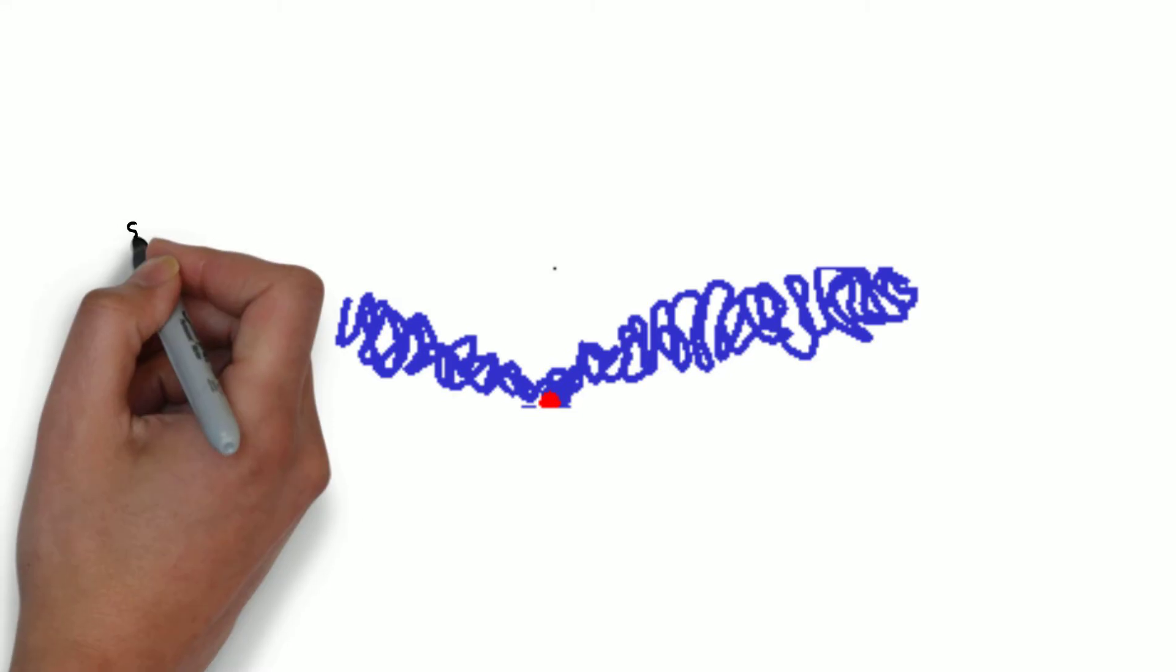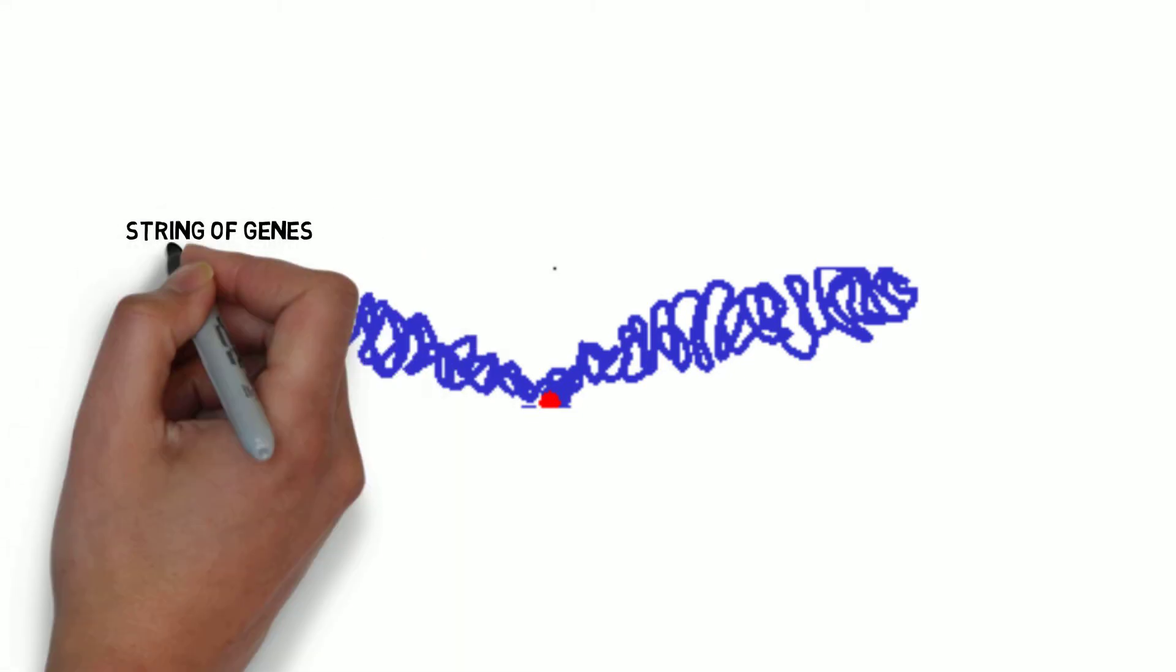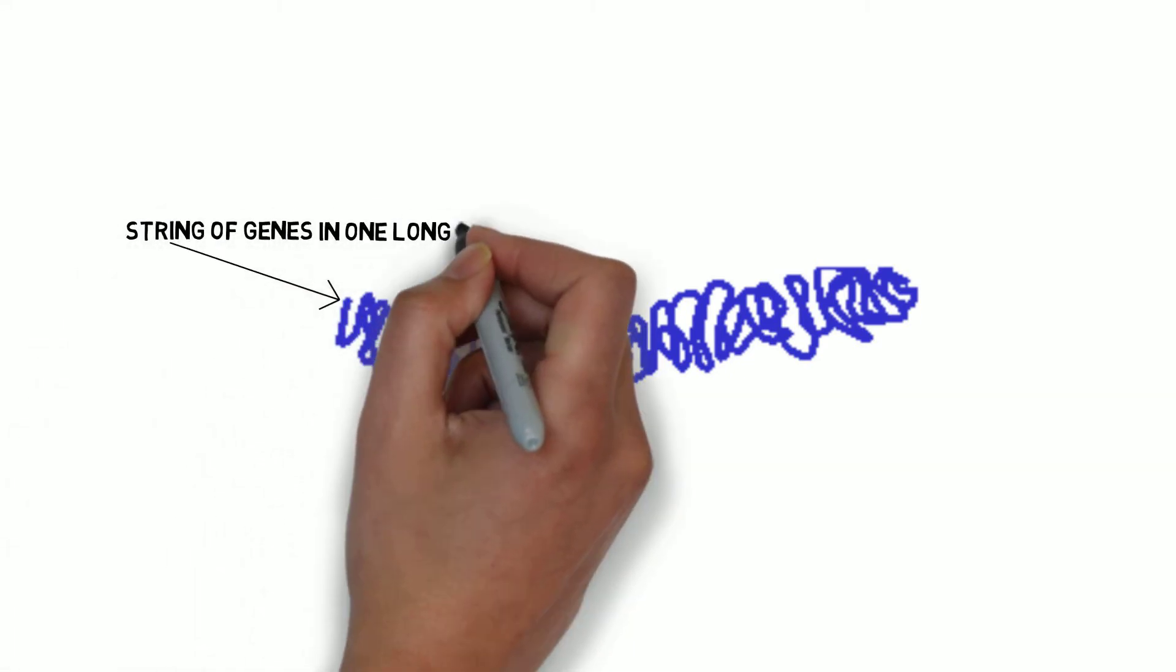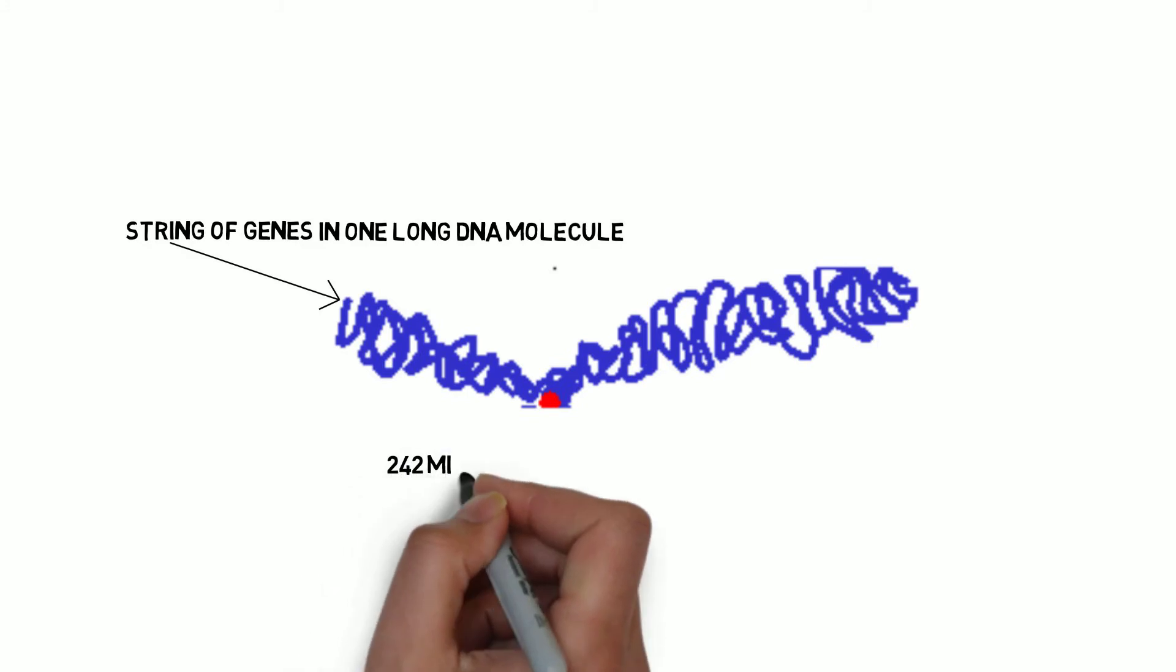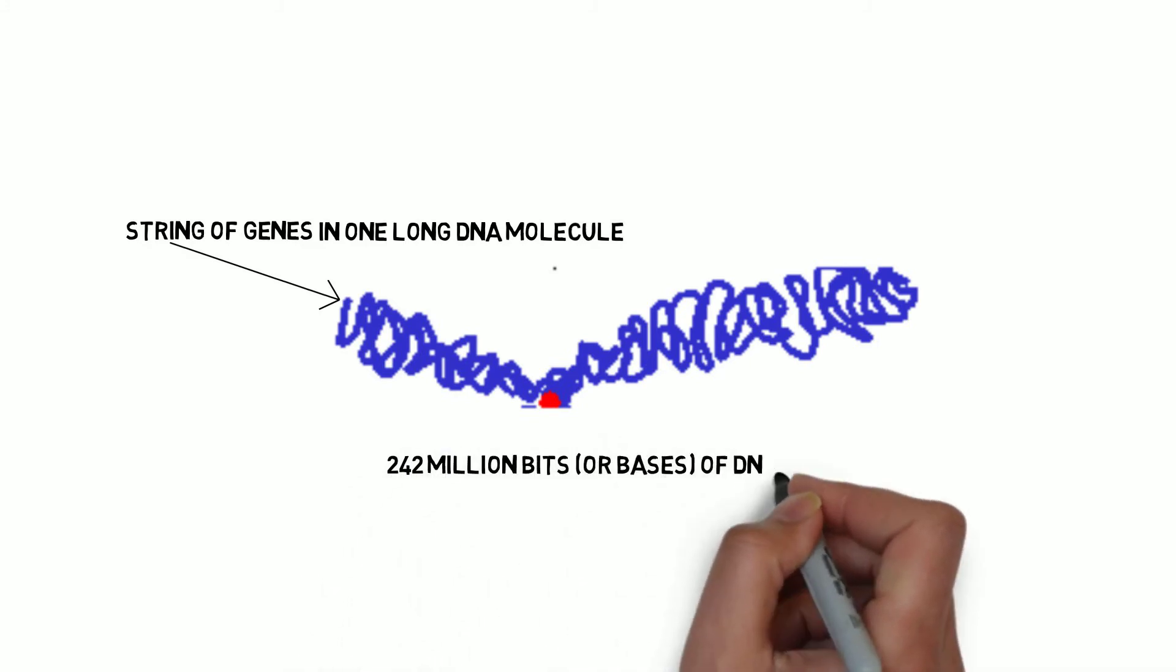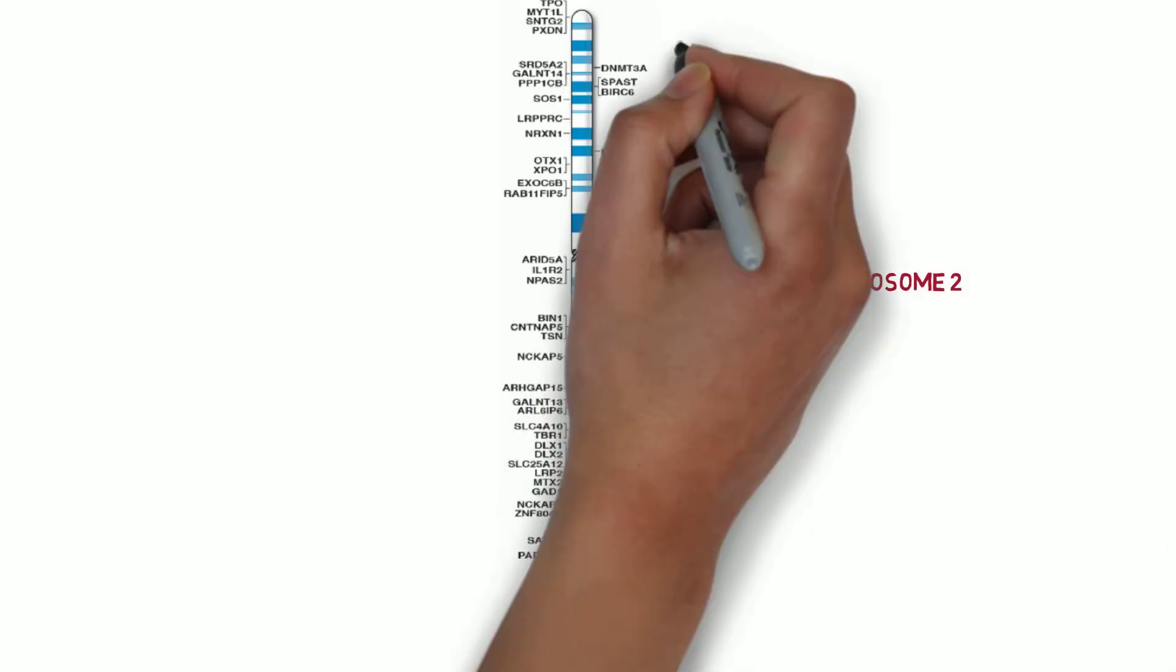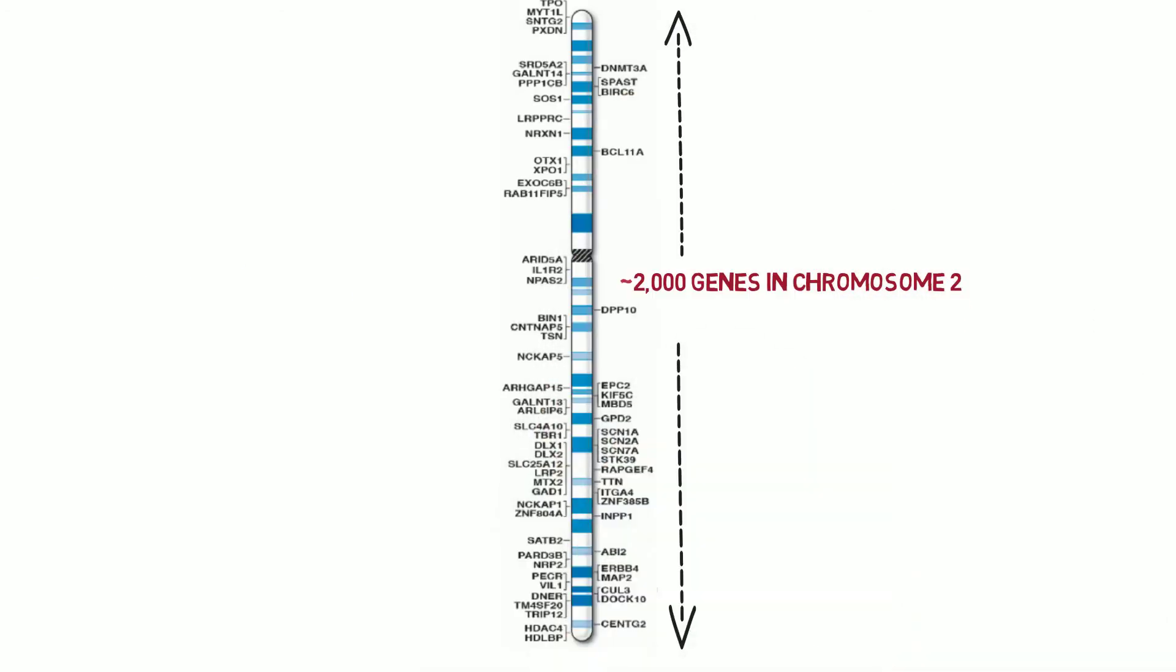A chromosome consists of genes arranged along a string of coding units in DNA. It is one long DNA molecule stretched from one end to the other. Chromosome number 2 specifically has about 242 million bits or bases of code. Genes are segments of this code, and there are about 2,000 genes on chromosome 2.